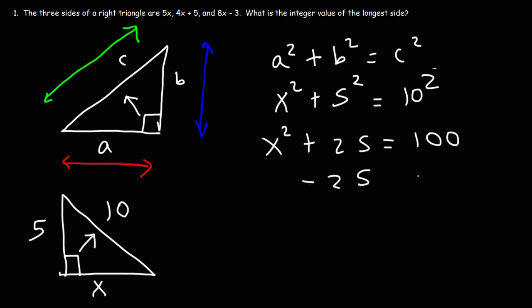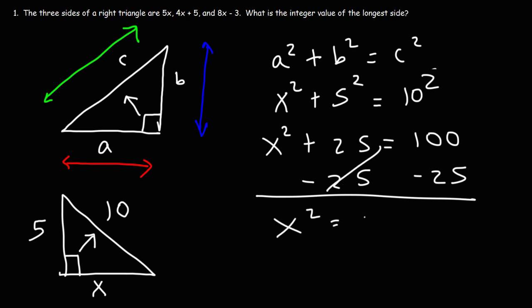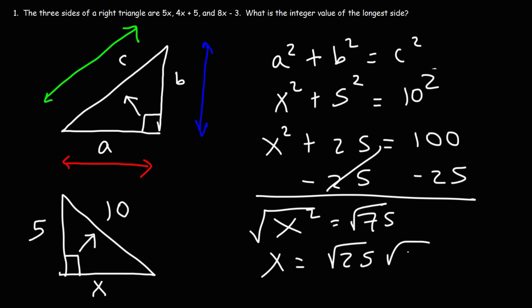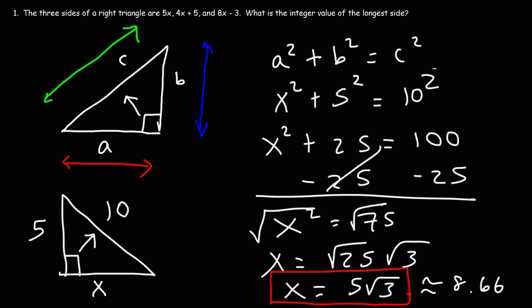We need to isolate X squared, so we subtract both sides by 25. 100 minus 25 is 75. To get X, we take the square root of both sides. The square root of 75 — since 75 is not a perfect square — we break it into 25 times 3. The square root of 25 is 5, so the missing side length is 5 times the square root of 3, which is approximately 8.66.